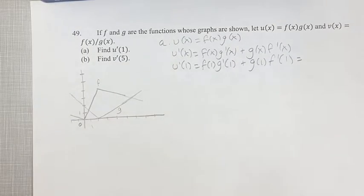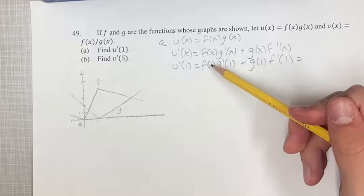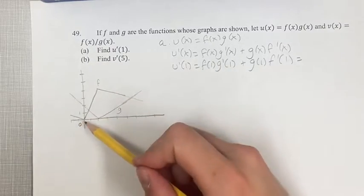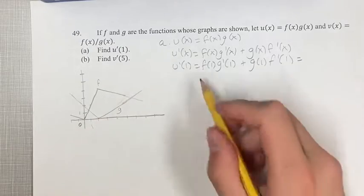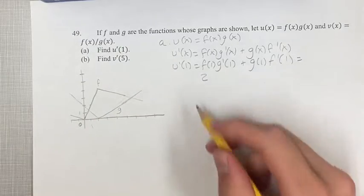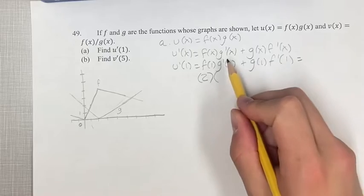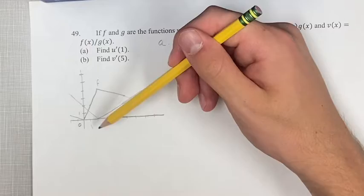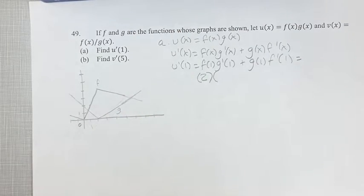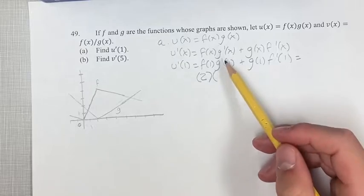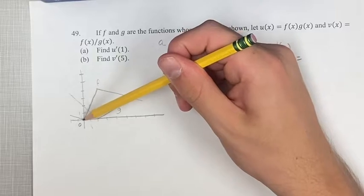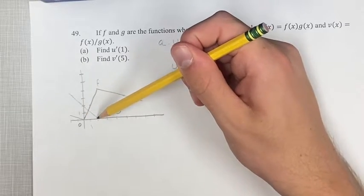Now we calculate these values from the graph. f of 1, looking at the graph, is 2. The derivative of g at 1 is the slope of that line segment, which we find using rise over run. We go 2 down and 2 to the right.